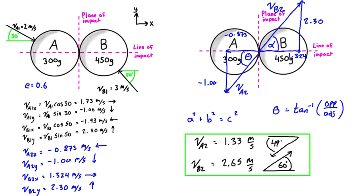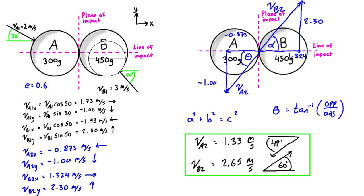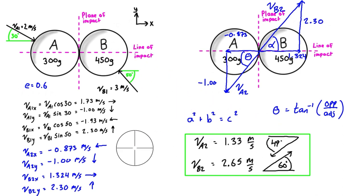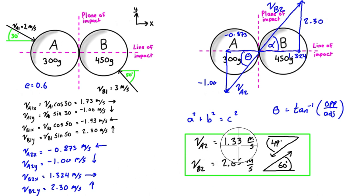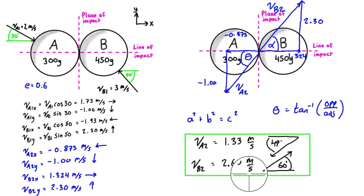That pretty much concludes the problem. We found va2 and vb2 — the final velocities of each object after impact — not only in component form but also as magnitudes with directions measured off the line of impact. Thanks so much for watching, and I'll see you in the next one.